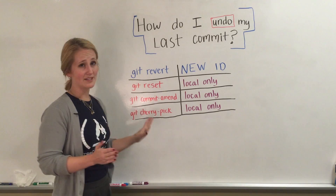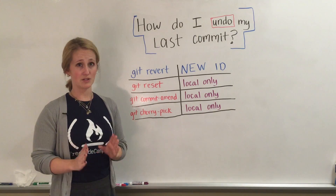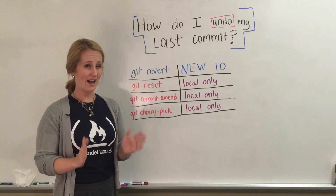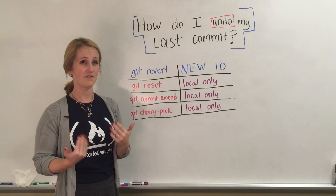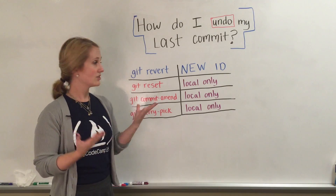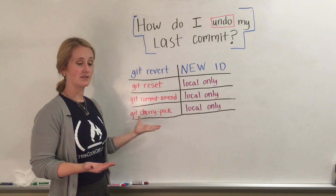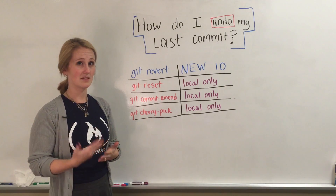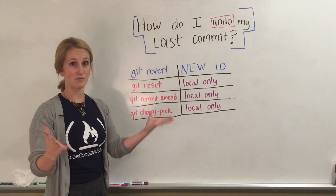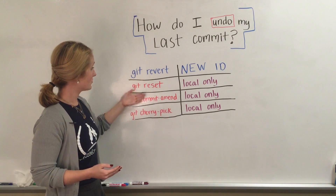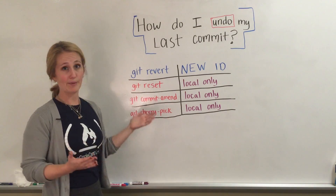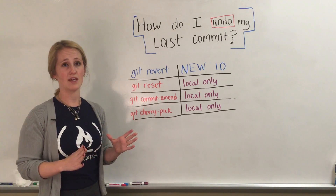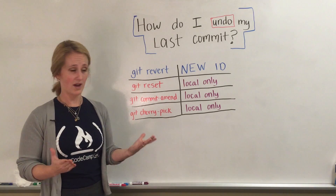There are other ways that you can undo commits too, but you need to be a little bit more careful about how you do them, and if you're actually using these commands on public commits — commits that are on the remote repository. Git reset is a very popular way to do it, and in a lot of use cases is the best way.